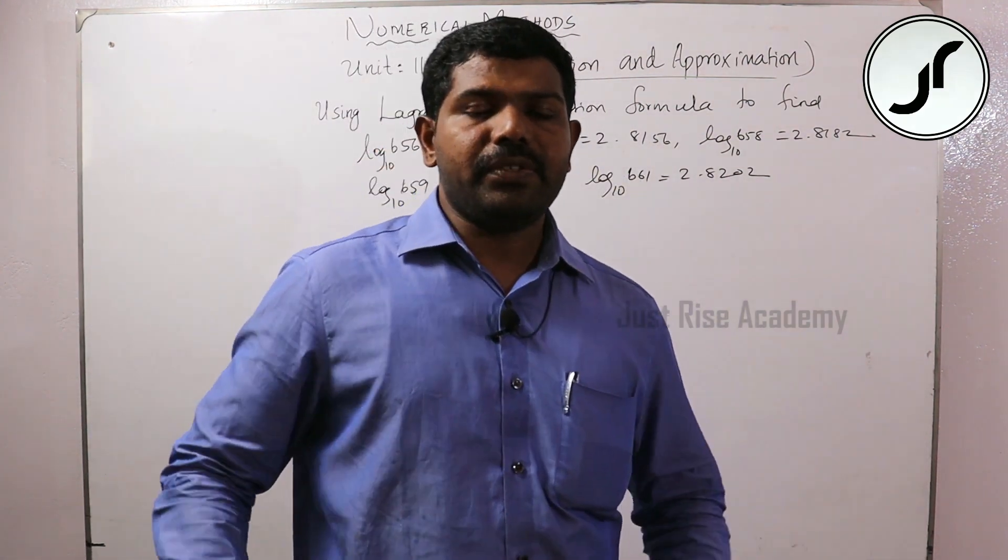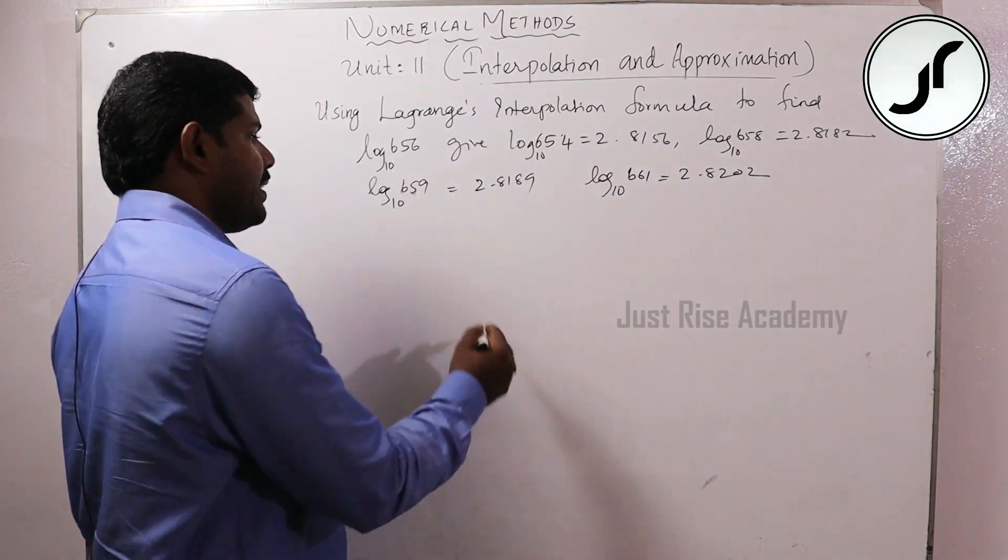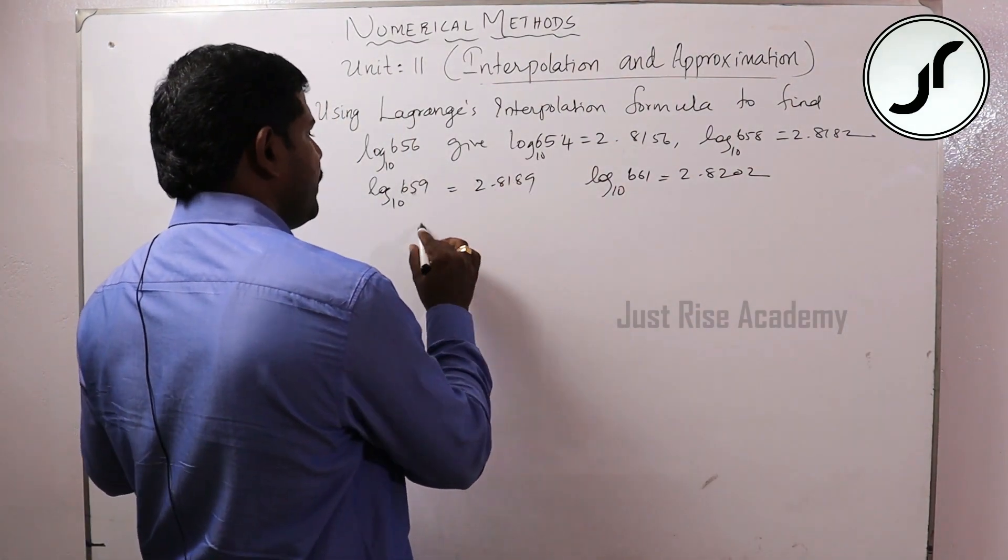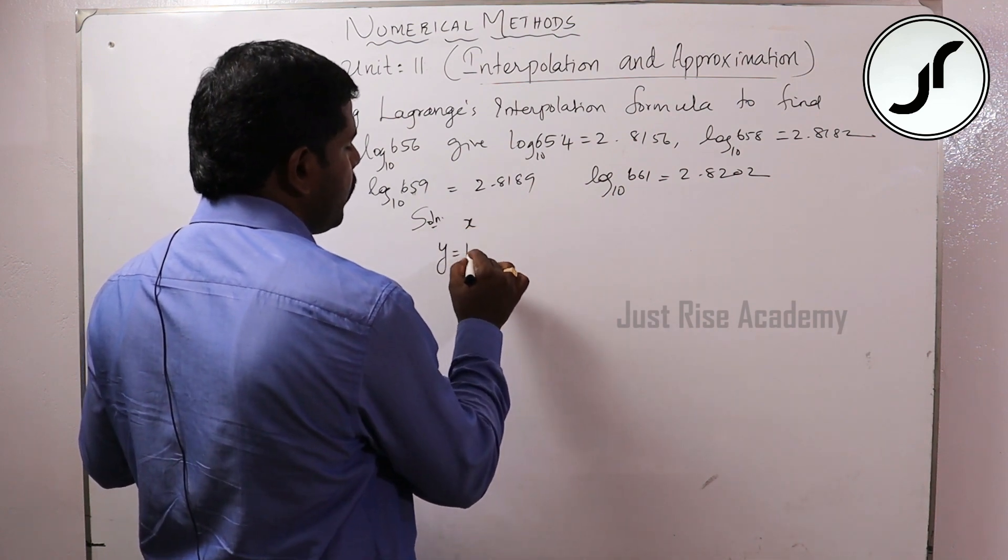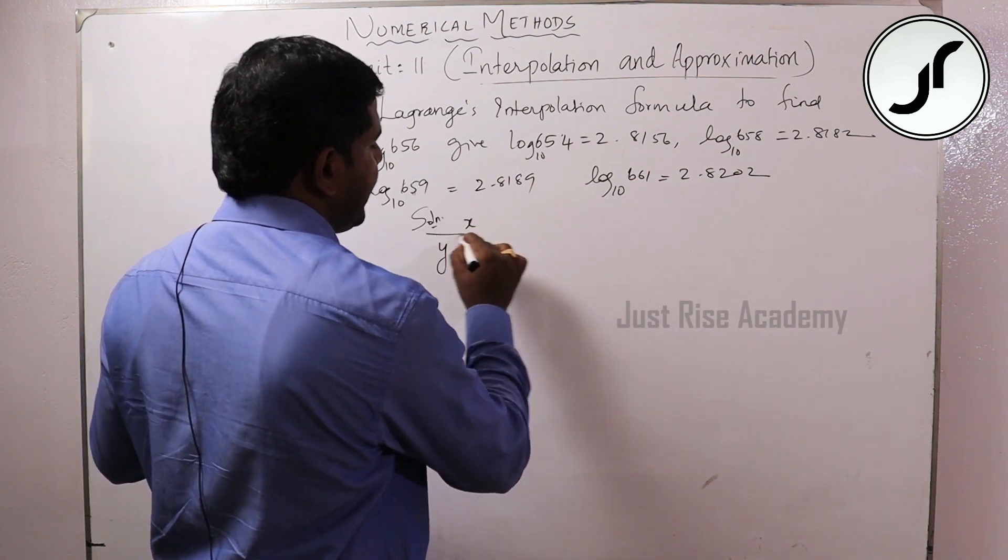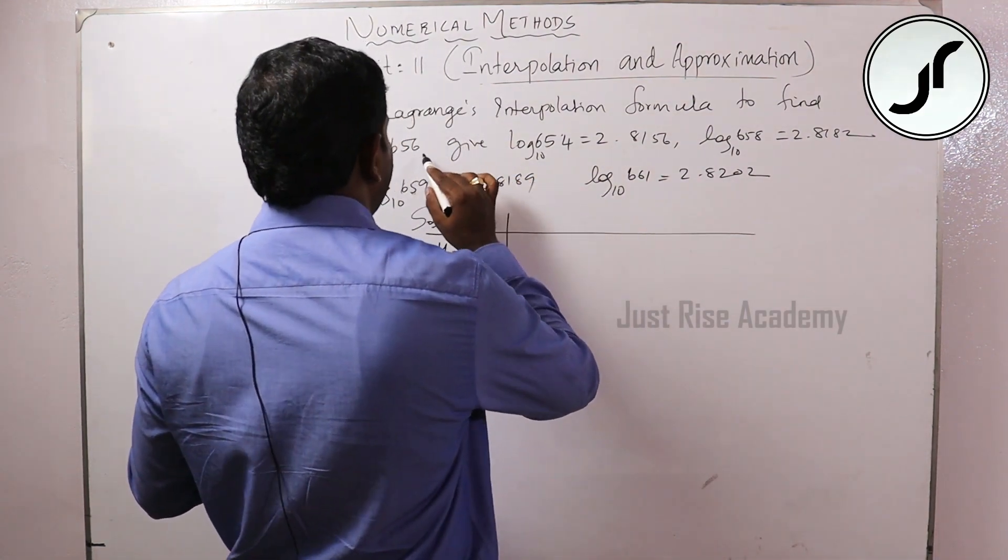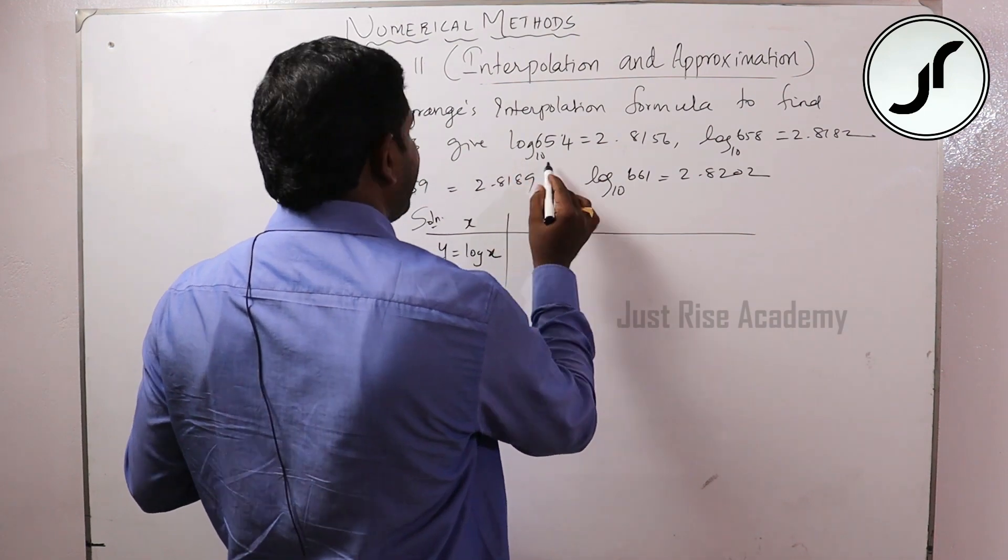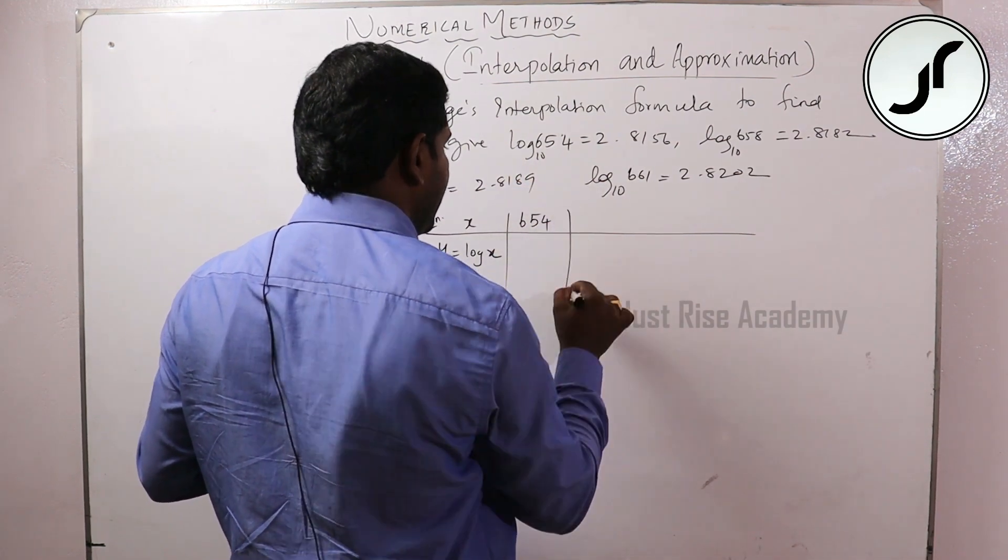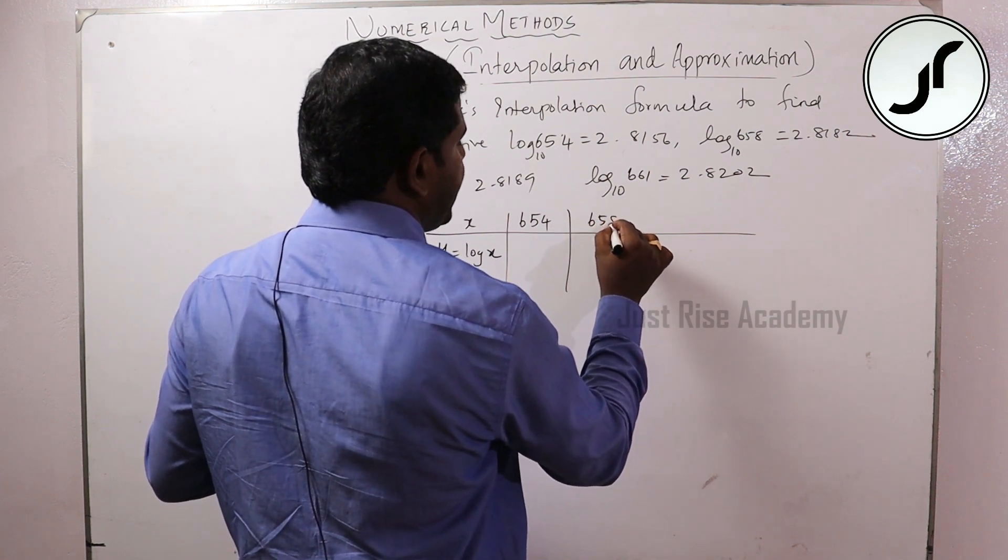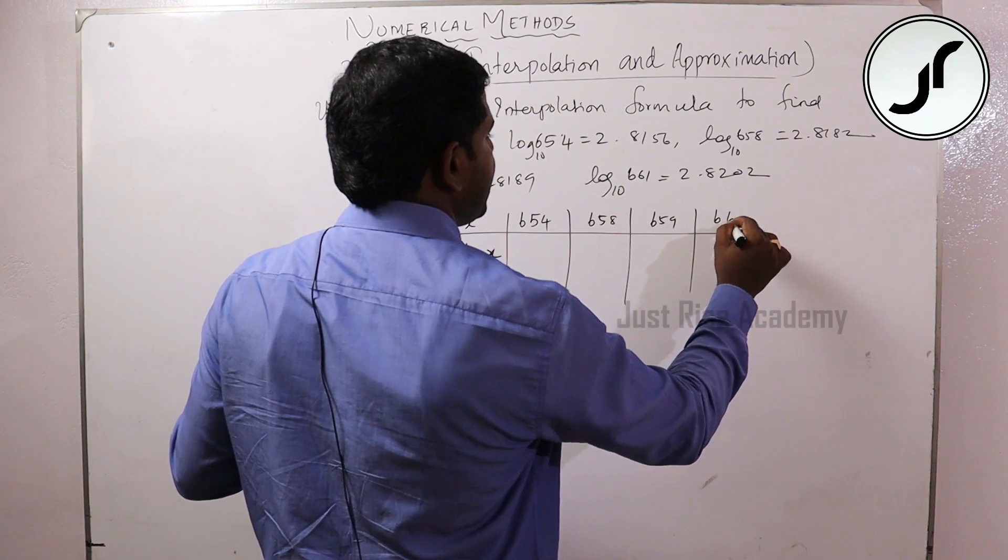X value, y value. First we are taking the given x values. So y equals log x. The given data: x values are 654, 658, 659, 661.